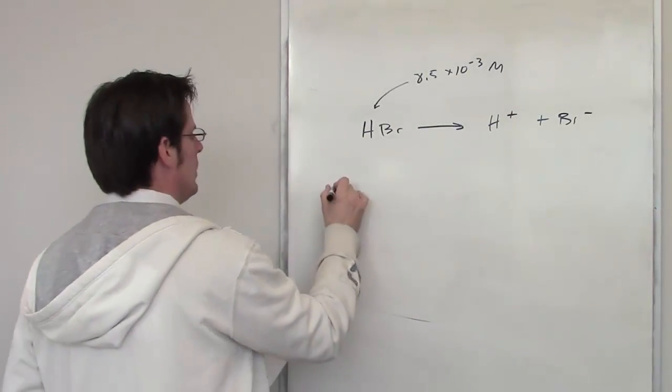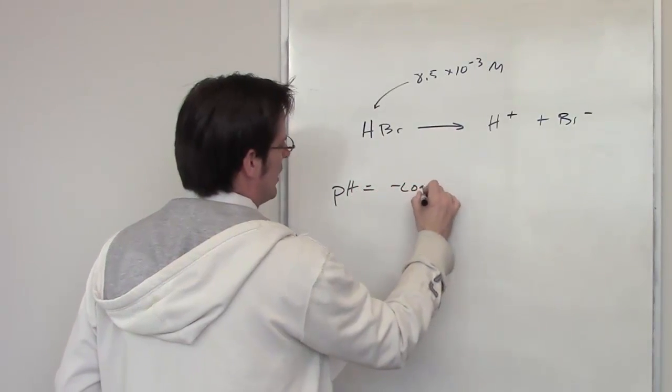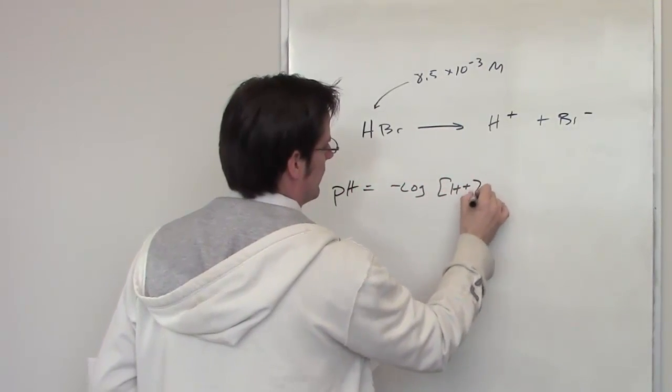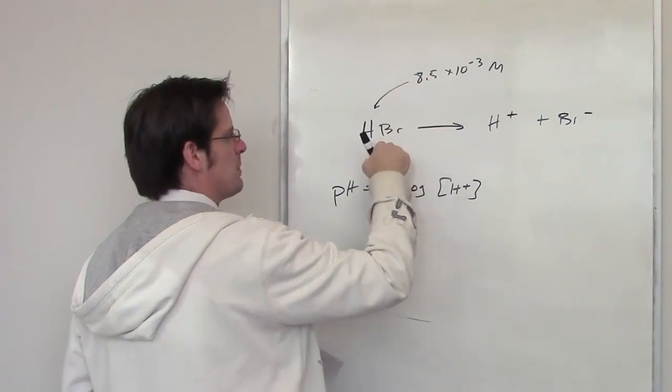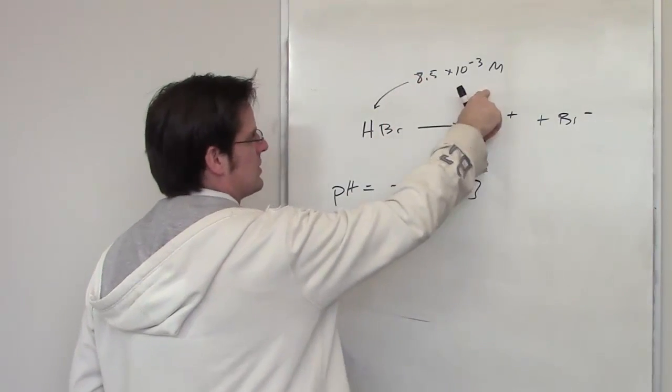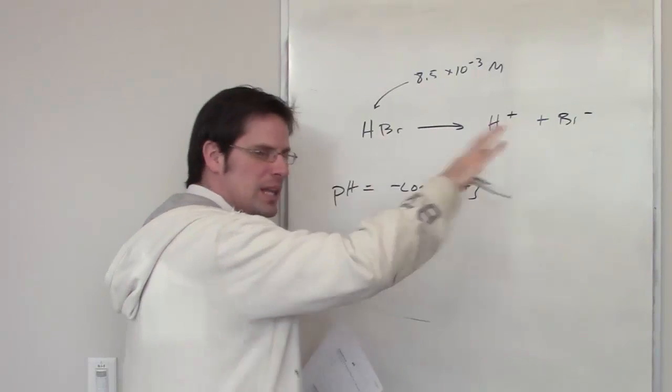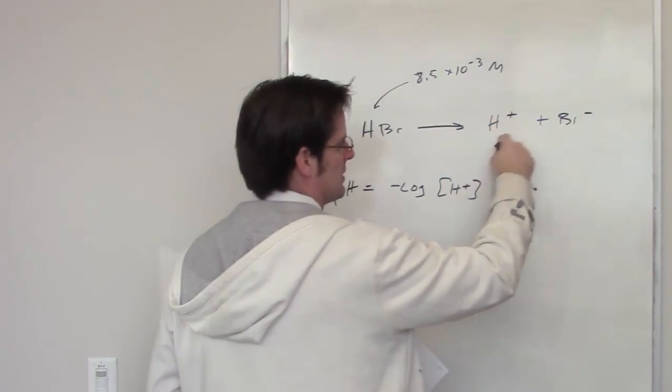pH is equal, as I've already told you, to the negative log of the concentration of H+. Now, the concentration of HBr is this. As soon as I throw it into water, it dissociates completely 100% to form H+ and Br-.